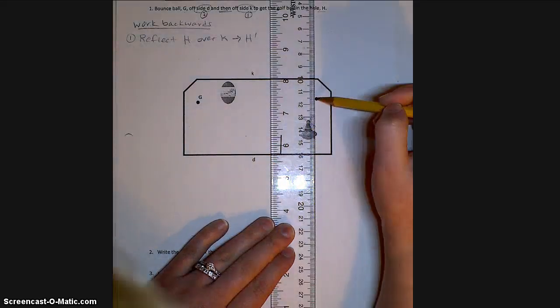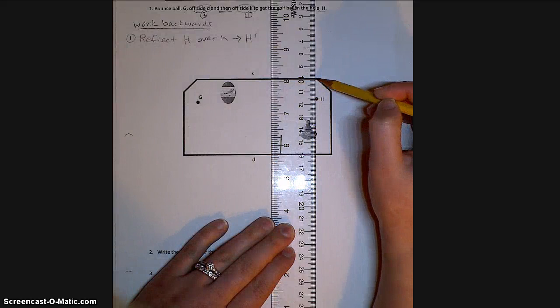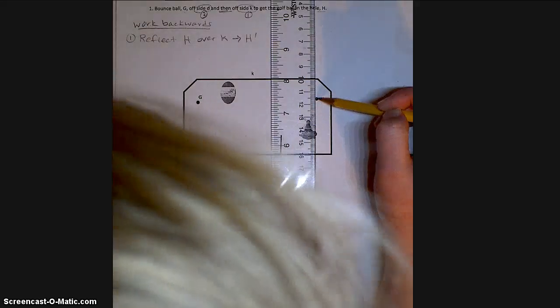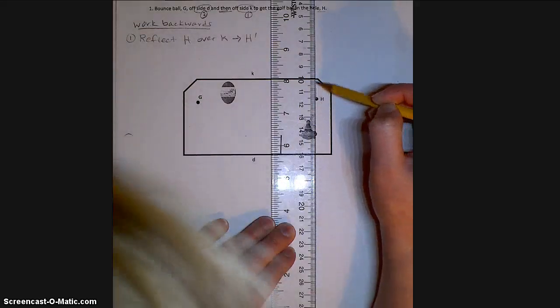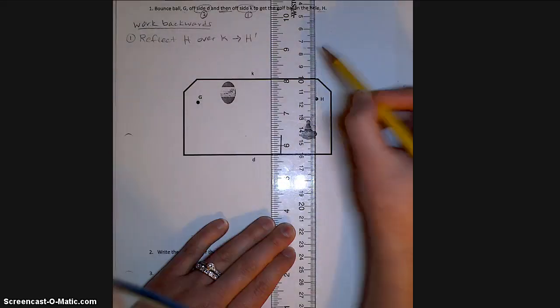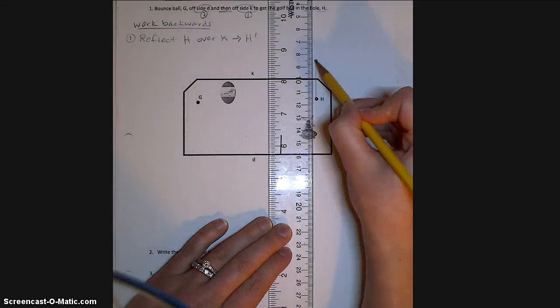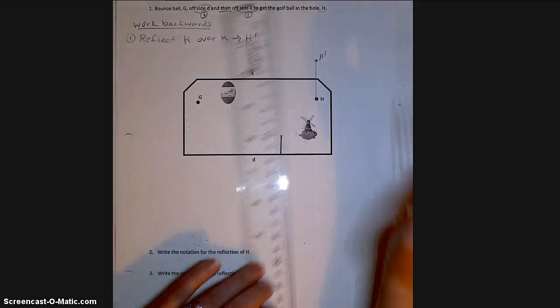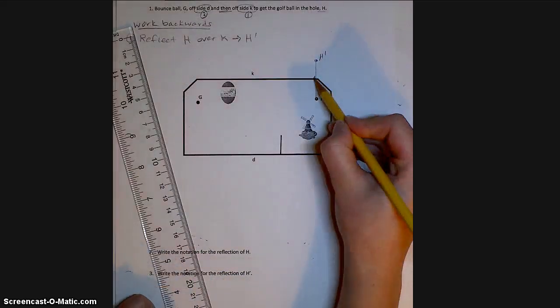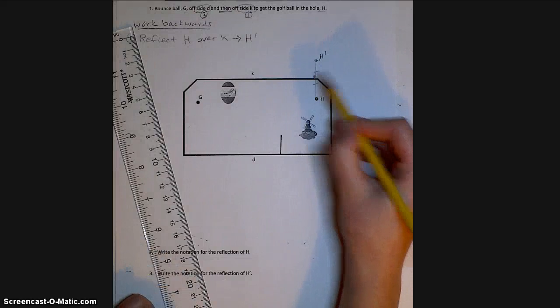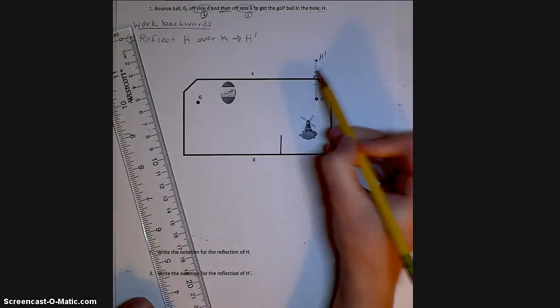And then you want to see how far away this point H is from our line of reflection. And it's about 1.5, 1.6 about. So I'm going to label that H prime and always show my symbols with the right angle and tick marks.